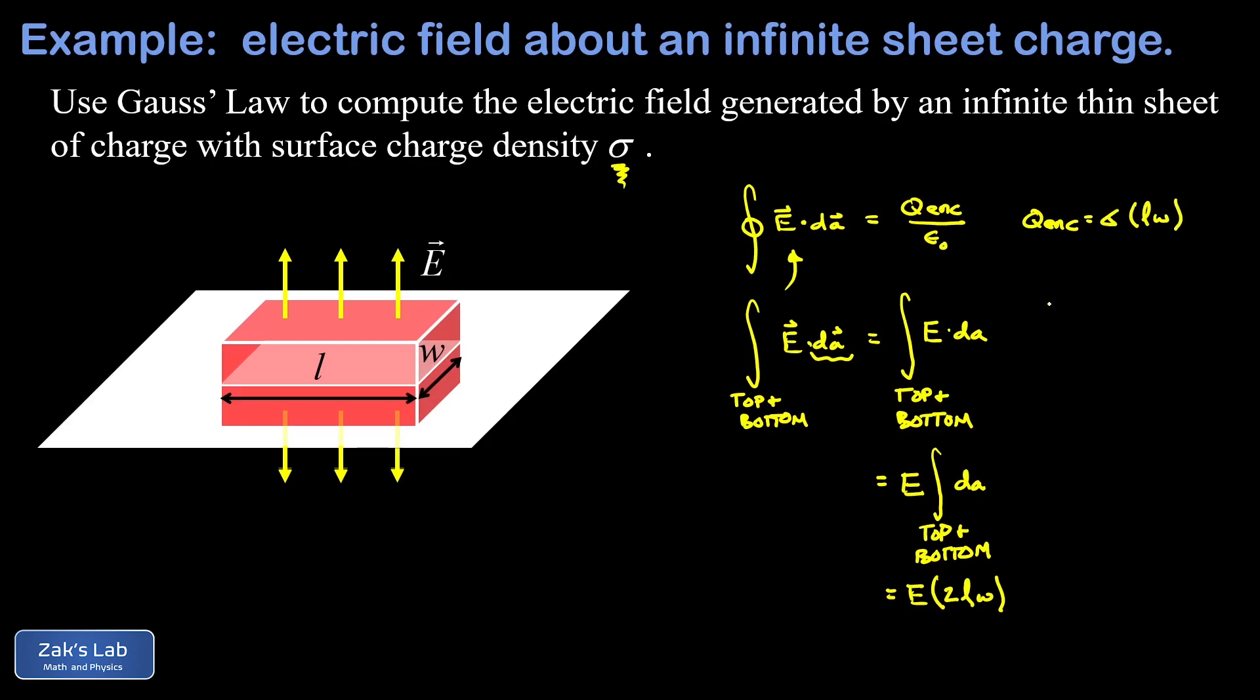So now we can put everything together with Gauss's law. Our flux integral turned out to be E times 2LW, our enclosed charge was sigma times LW, and we have to divide by epsilon zero on the right hand side.